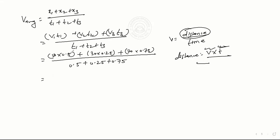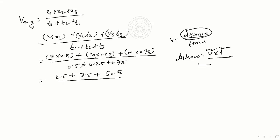50 into 0.5, that is 25. Plus 30 into 0.25, that is 7.5. Plus 0.75 multiplied by 70 gives 52.5. The whole thing divided by, now we have to solve, 0.5 plus 7.5 plus 52.5. Our answer is 85.